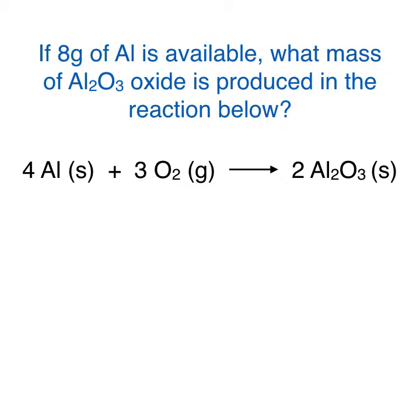Let's write down what information we gather from the problem. We know that the mass of aluminum is 8 grams, and we know that we're looking for the mass of aluminum oxide.